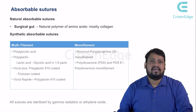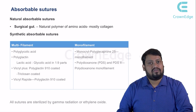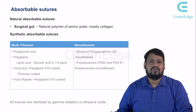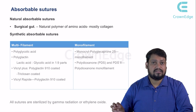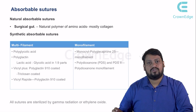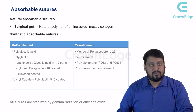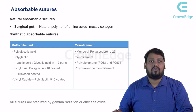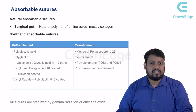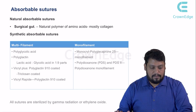Under absorbable sutures, we have natural absorbable sutures like surgical gut, taken from the gut of cattle, sterilized, and used for suturing. It is a natural polymer of amino acids, mostly made up of collagen — 99% collagen. Questions can be expected asking what surgical gut is made up of: the answer is a polymer of amino acids, mostly collagen.